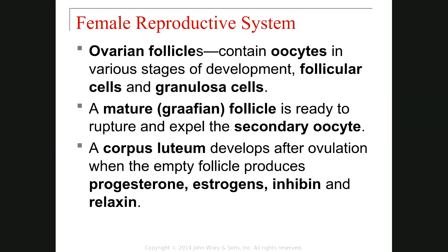Now I want to talk about the ovarian follicle. The ovarian follicle is composed of two cell types. One is called the oocyte, located in the center of the ovarian follicle — we only have one oocyte in one follicle. The other cell type is called follicular cells or granulosa cells, located around the oocyte. We only have one oocyte, but we have a group of follicular and granulosa cells.